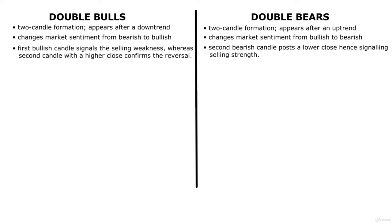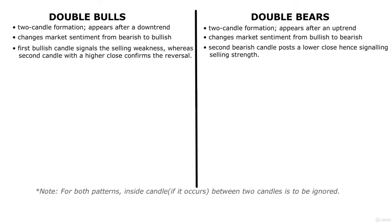Another thing to remember while looking for a double bulls or double bears pattern is that you will not invalidate these patterns if there is an inside candle between the two candles. An inside candle is defined as a candle which fails to go past the high or low of the previous candle. If there is an inside candle after the first bullish candle in a double bulls pattern or vice versa, you will ignore the inside candle and continue studying the next or third candle to validate the pattern.